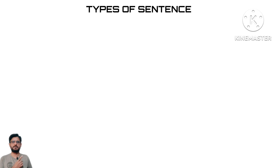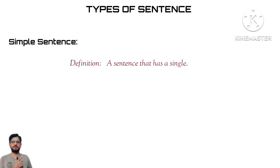First we are going to begin with is a simple sentence. A simple sentence is the one that has a single clause. It doesn't have a dependent clause or any other types of clauses in it. It is not based upon multiple clauses, rather it is based upon only one clause. For example, 'I like to play cricket in the morning.' This is a sentence with only one clause — it is simply based upon one clause, and that is the activity of playing cricket in the morning.